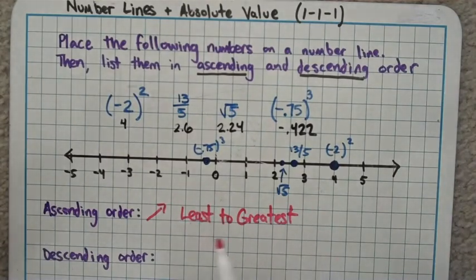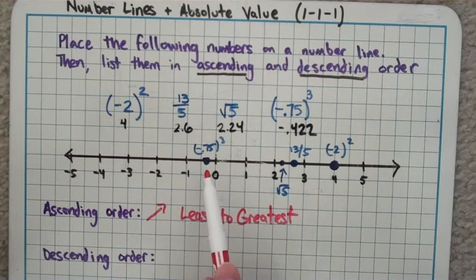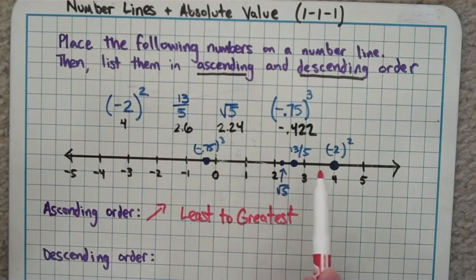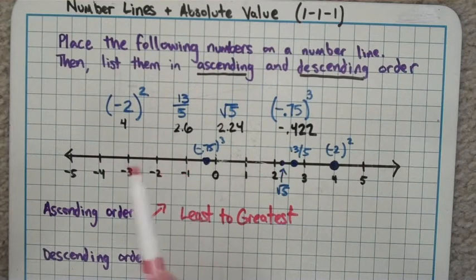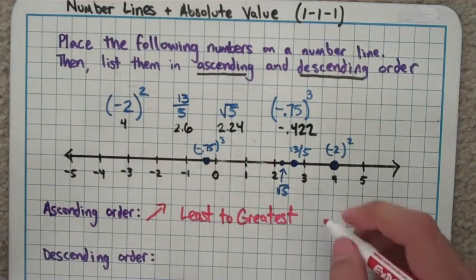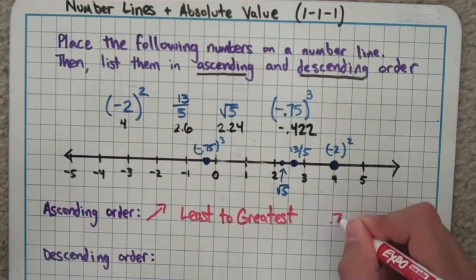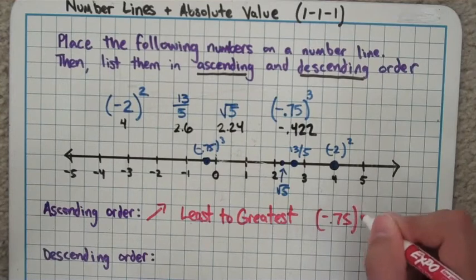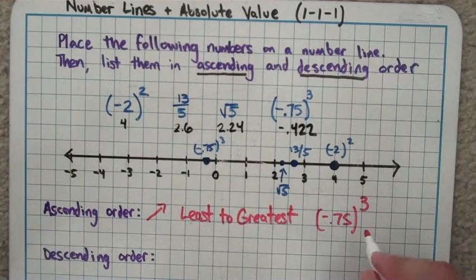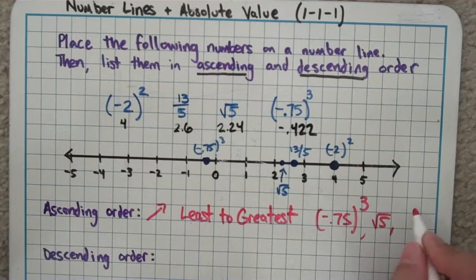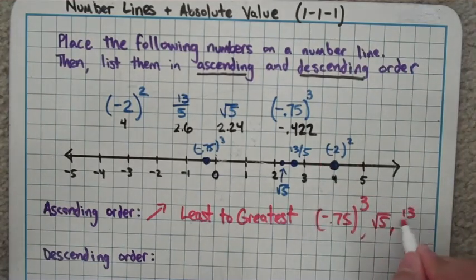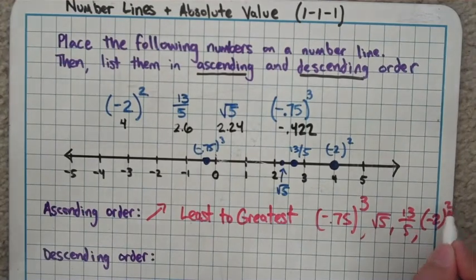So ascending order, we want our numbers to go from smallest to biggest. We want our numbers to go up or ascend as we go. Once you have your numbers on a number line, that's really not bad to do. You just start here and as you get bigger, you go further to the right. So I'm going to list my dots off from the farthest one to the left over to the right. My list for that is going to be negative 0.75 to the third, then I've got my square root of 5, followed by my 13 over 5, and finally negative 2 squared.